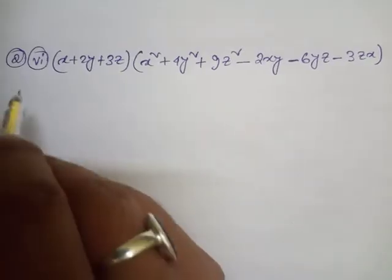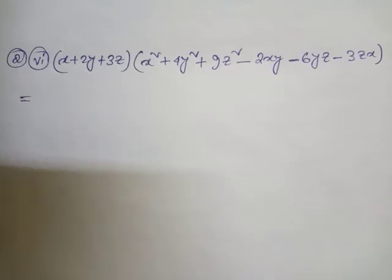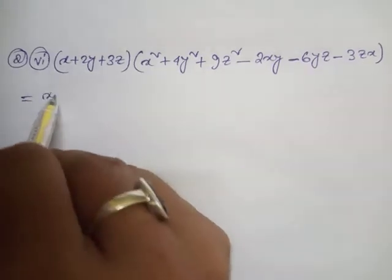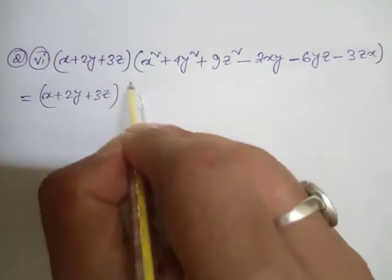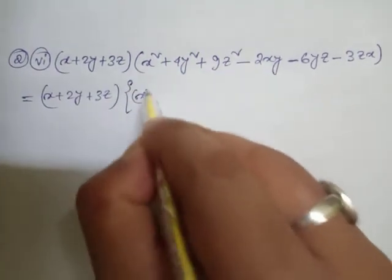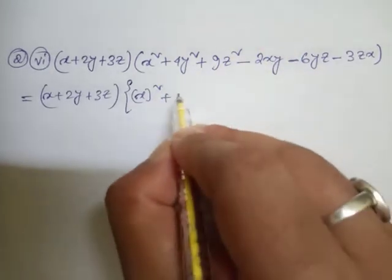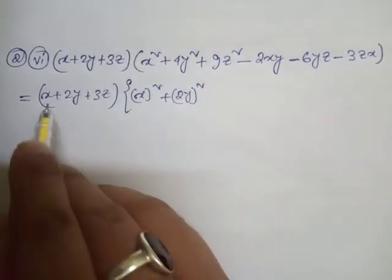Now look how to solve this one, question number 2 roman 6: x + 2y + 3z. And now look here, x², so it can be written as (2y)² which means a + b + c, a² + b² + c².